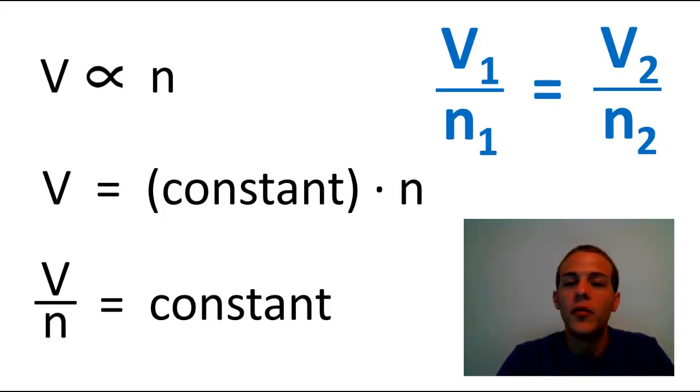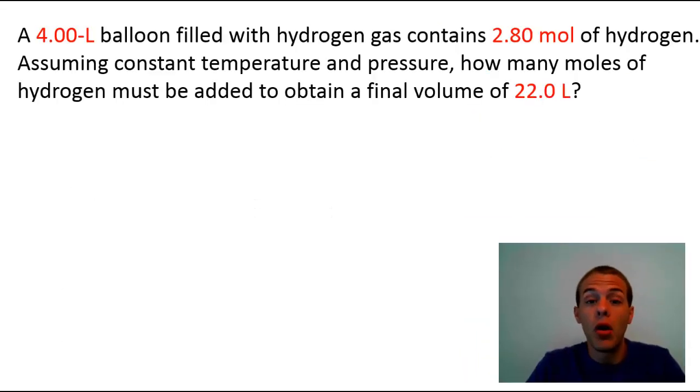V1 over n1 equals V2 over n2. So V1 and n1 could be the volume and the amount of a gas when there's not really much in there and you have a small volume. And then V2 and n2 could be the situation where you have a large volume and a large amount of your gas. So before we end the video, let's just go into one example of a problem involving Avogadro's law.